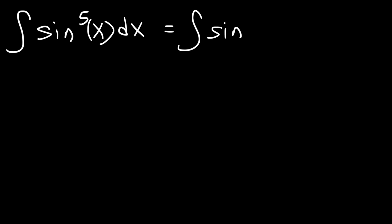And that is sin^4 times sin. There's an invisible one here, so 4 plus 1 is 5. Now the reason why we need to do this is because we need to use substitution. And any time you have an odd power, you want to keep one of the trig functions on the outside if you're dealing with sine and cosine.